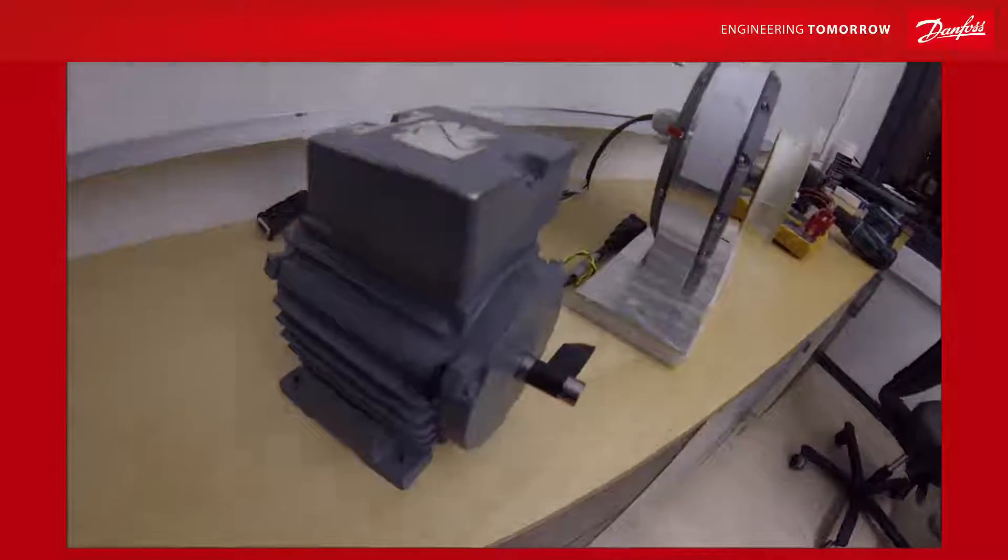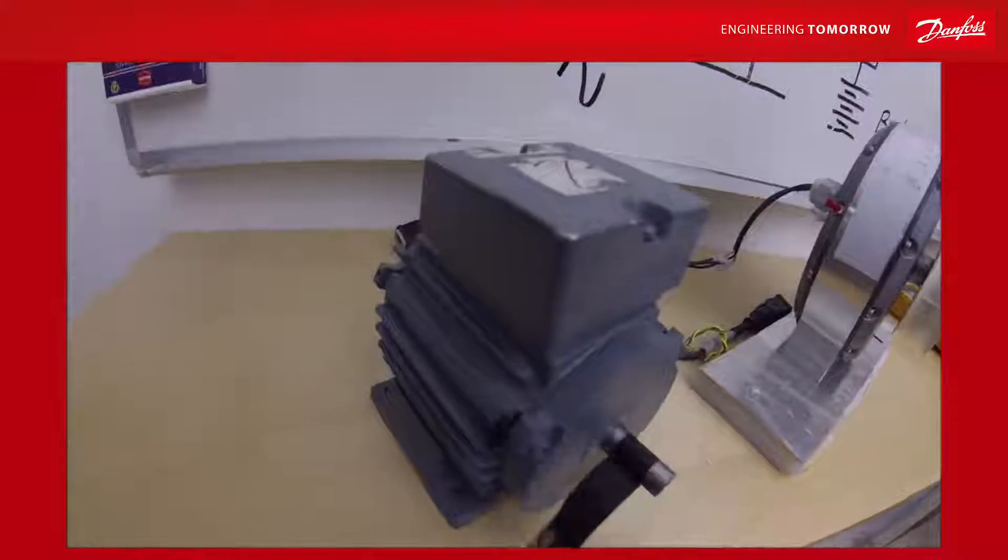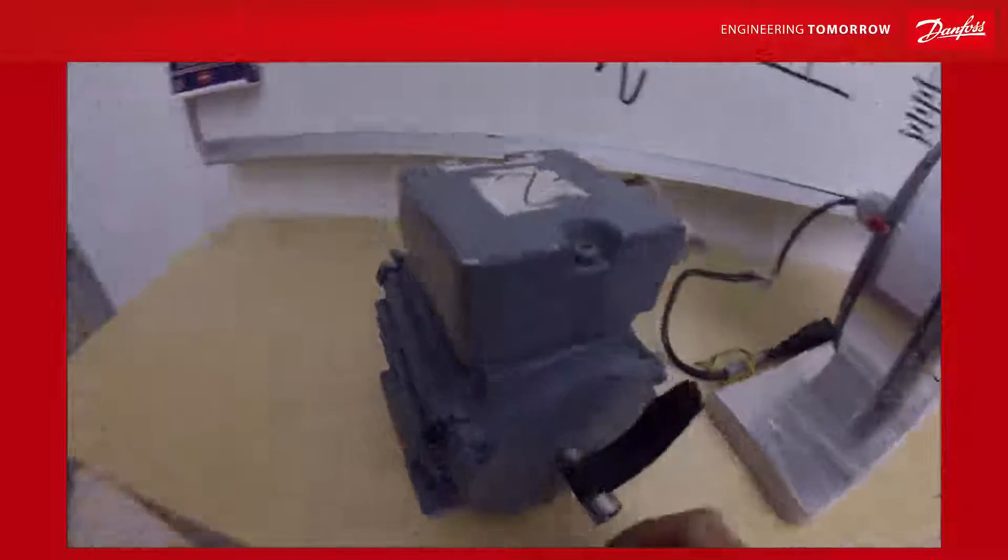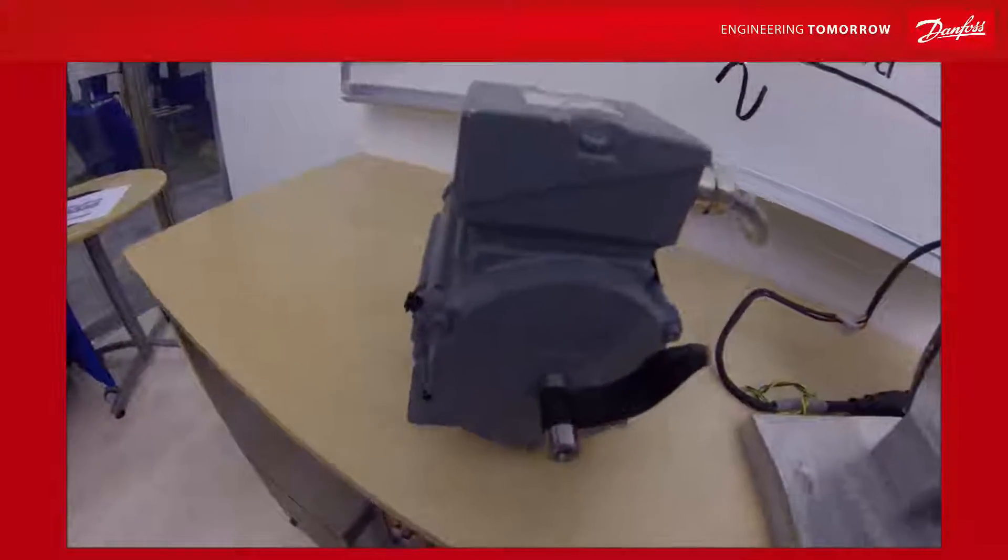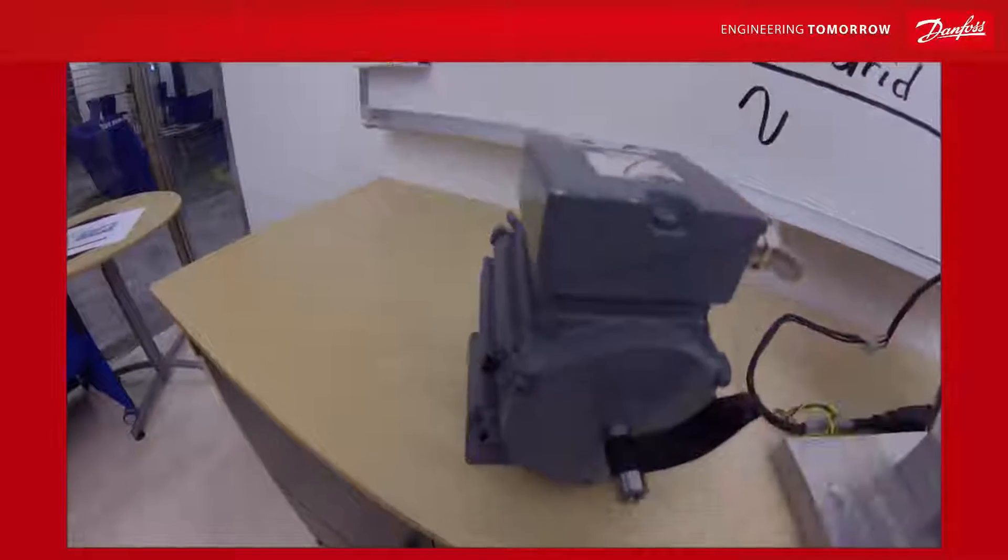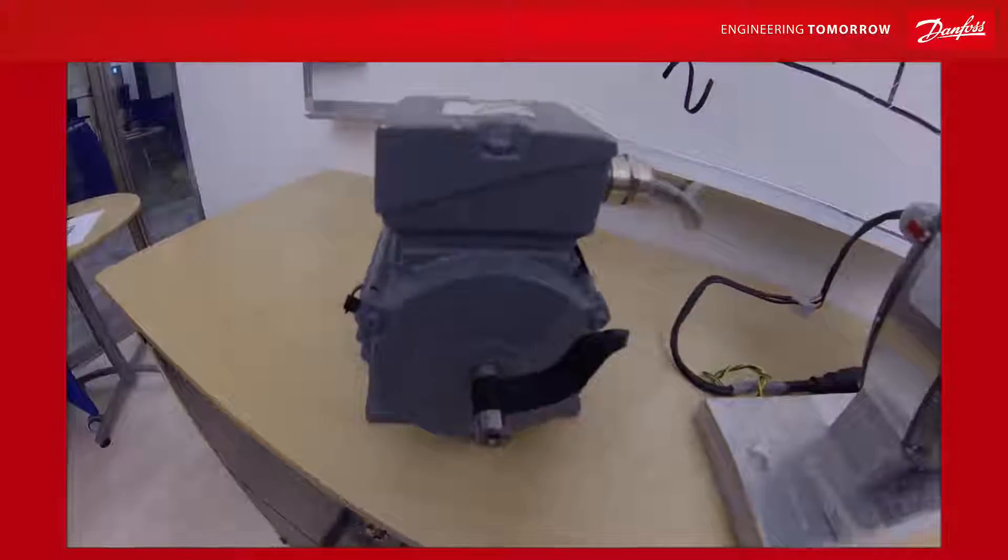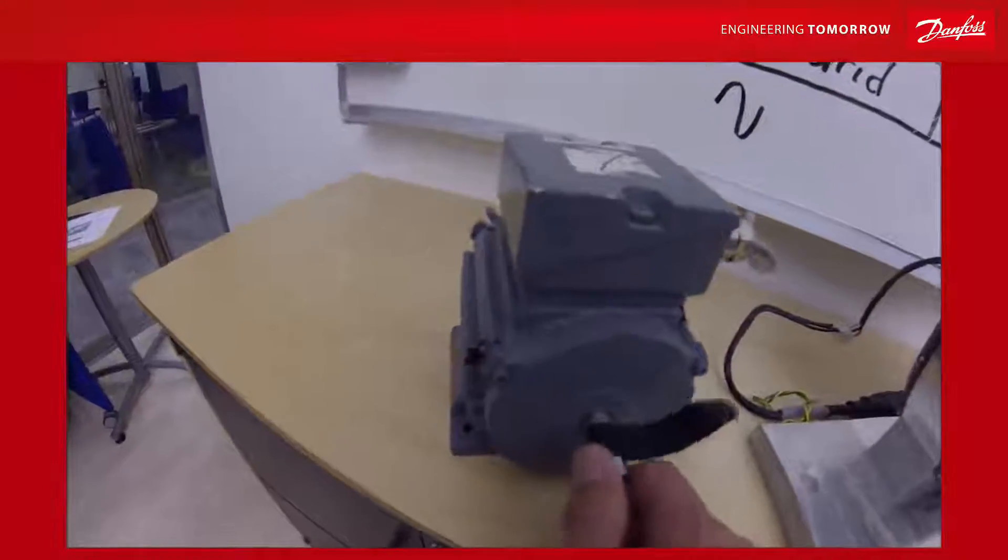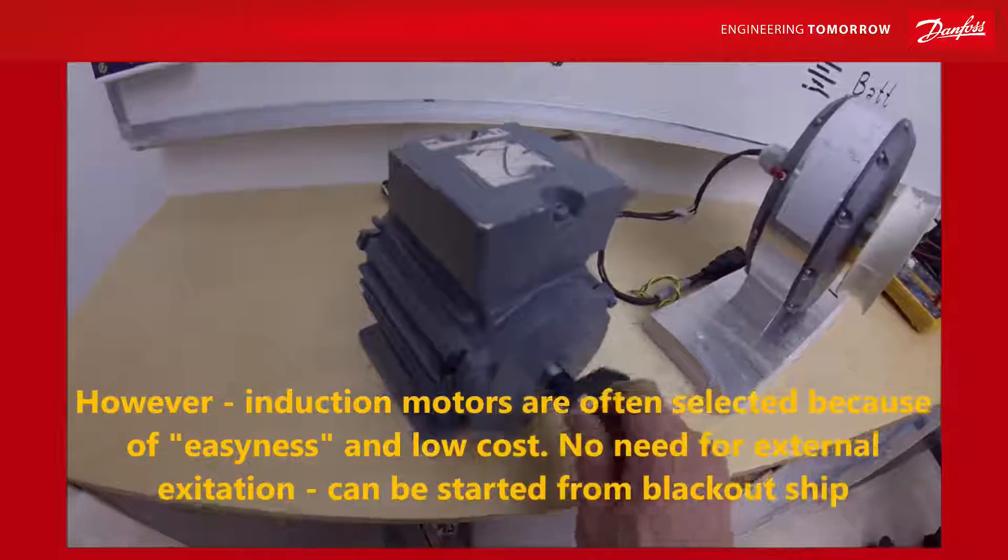Machines utilized for shaft generator could be asynchronous generator like this. Asynchronous motors and generators need to be magnetized from the outside continuously. The current running here, a reactive current of about 40% of the motor nominal, causes higher losses. So induction motors are not the highest efficiency for generator use.